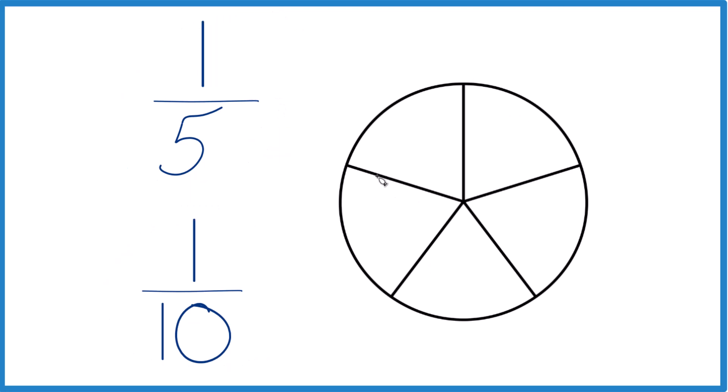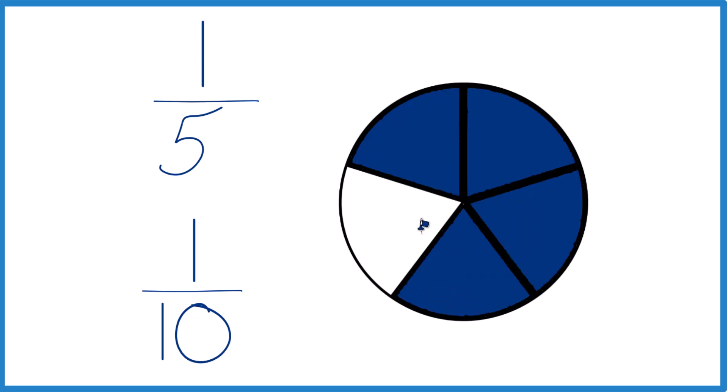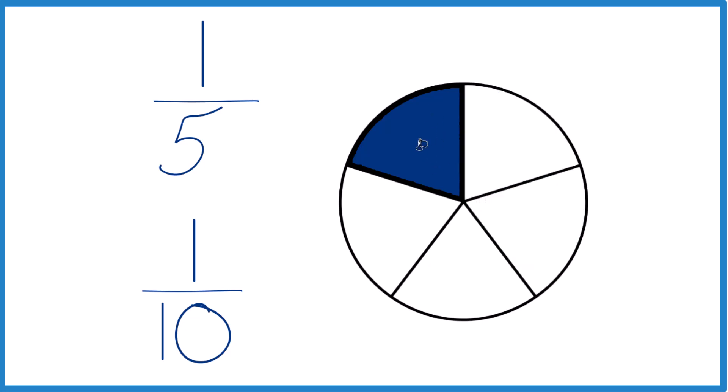So if you divide a circle up into fifths here, there's five pieces. So each one of these pieces is one-fifth. So right here is one-fifth. So you can see how large one-fifth is.